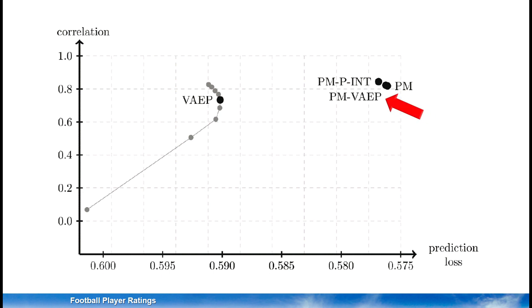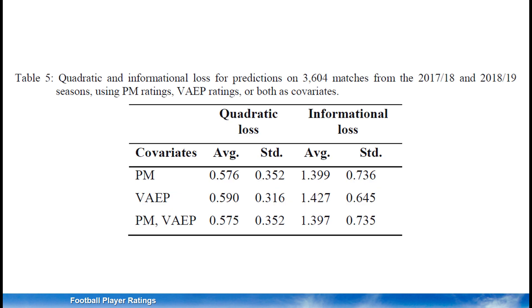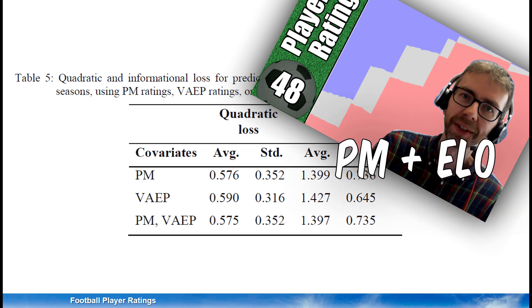We can now compare the performance of the VAEP ratings and the plus-minus (PM) ratings, including two variants of plus-minus where information about event data is included. For VAEP, we tested different values of the big M parameter. With small values of big M, the resulting ratings are really bad — not reliable and not good for predictions — as the ratings of players with few minutes played are too noisy. Increasing big M reduces the noise issue and gives gradually more reliable ratings, but their validity is still relatively poor and they do not generate very good match outcome predictions. Across two different loss functions, plus-minus leads to better predictions than VAEP. Also, combining PM and VAEP does not help much compared to just using PM.